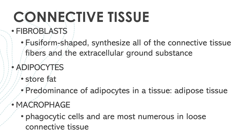Your adipocytes store fat, and if there is a predominance of adipocytes in a tissue, then you call that tissue adipose tissue. Your macrophages are phagocytic cells and are mostly found in loose connective tissue. They are derived from circulating blood monocytes that take up residence in the connective tissue. Please note that macrophages have specific names in different organs. In the liver, they are called Kupffer cells. In the bone, they are called osteoclasts. And in the central nervous system, you have your microglia.